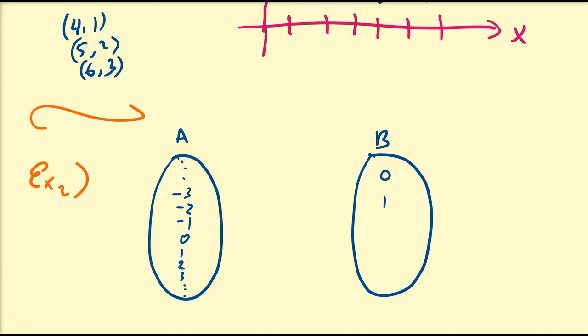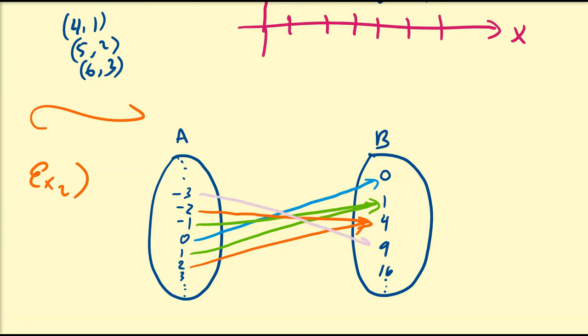So 0, 1, 4, 9, 16, and so on. And I'm going to compare them in such a way such that 0 gets mapped to 0. I'm going to map negative 1 and 1, both of them to 1. I'm going to map negative 2 to 4, and 2 to 4. I'm going to map negative 3 to 9, and 3 to 9.